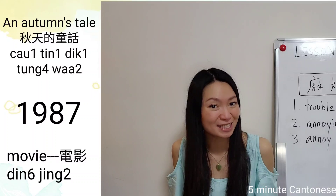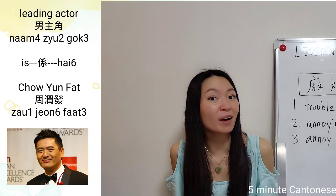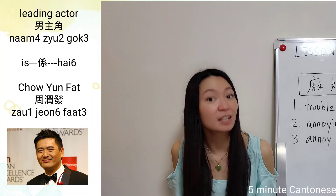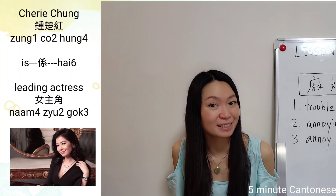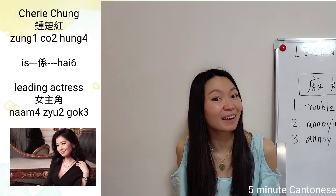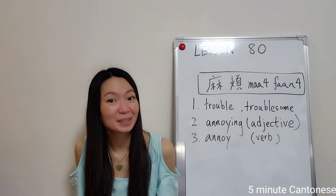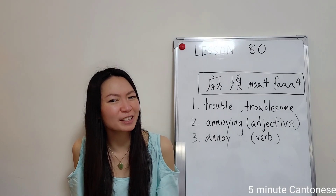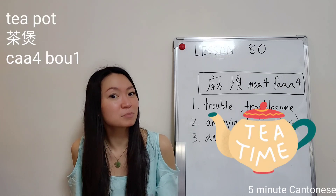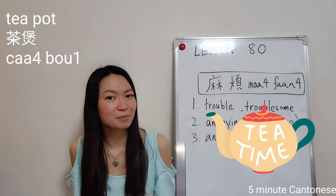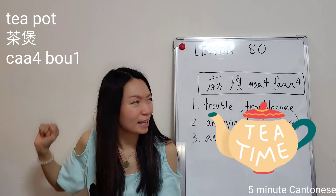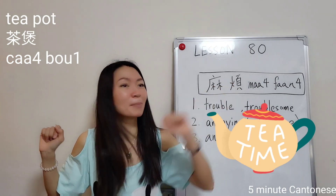秋天的童話是一套1987年的電影。男主角是周韻發。The leading actor is Chao Yun-Fan, and the leading actress is 鍾楚紅。In the movie, Chao Yun-Fan explained the word 麻煩. He used 茶包 to explain the word 麻煩.